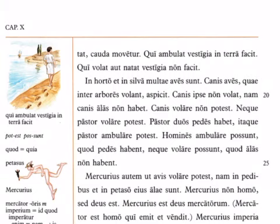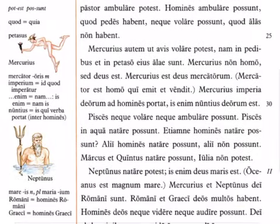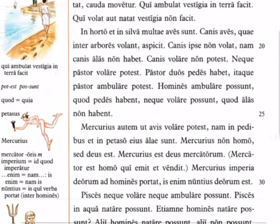We also see Petasus, which is a hat, and Mercurius, which is Mercury — another Roman god. And Neptunus, who is Neptune. Mercury is the god of trade, travel, and trickery; he's also known as the messenger of the gods. Neptune, or Poseidon, is the god of water, earthquakes, and horses.